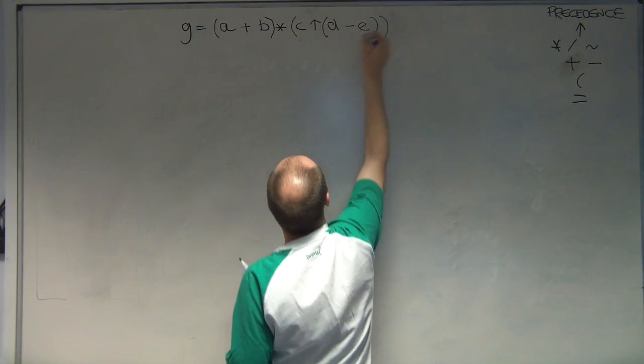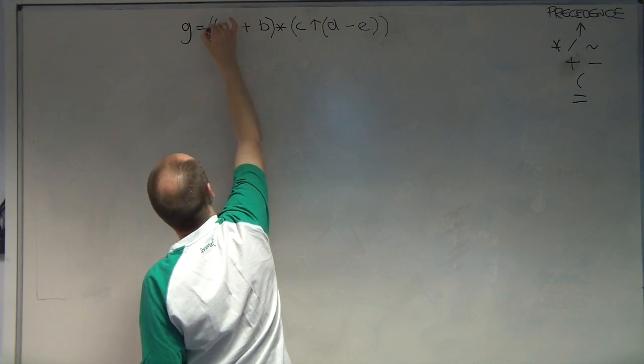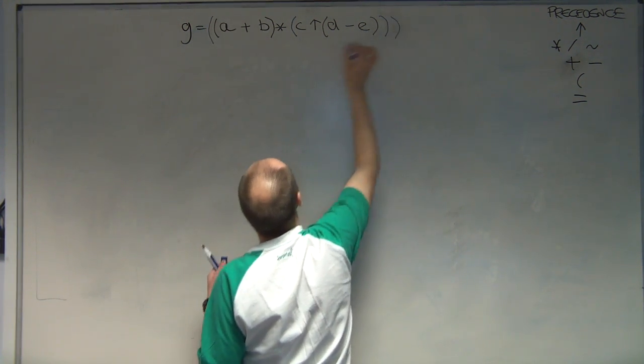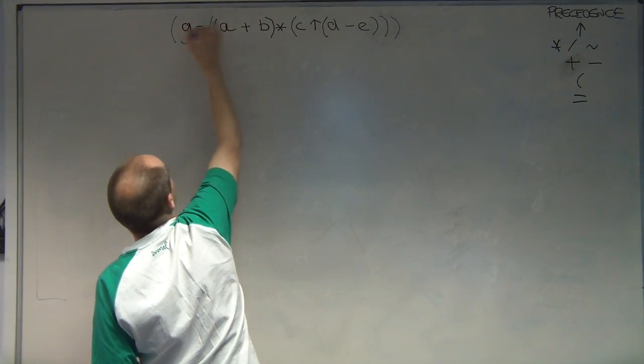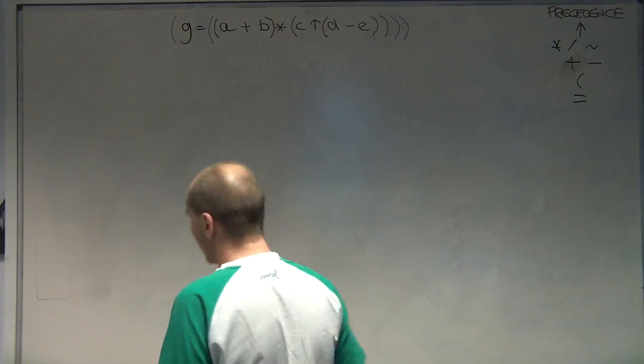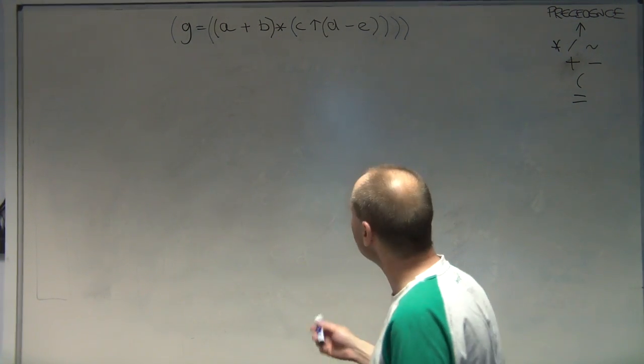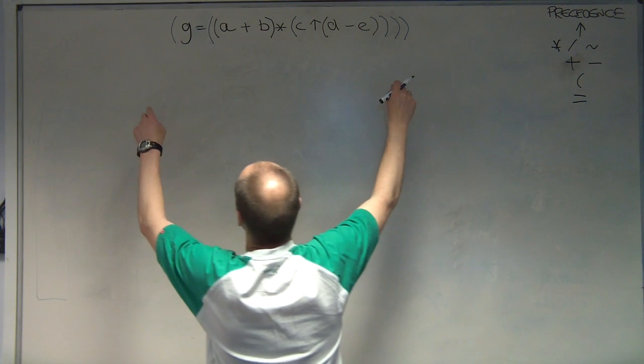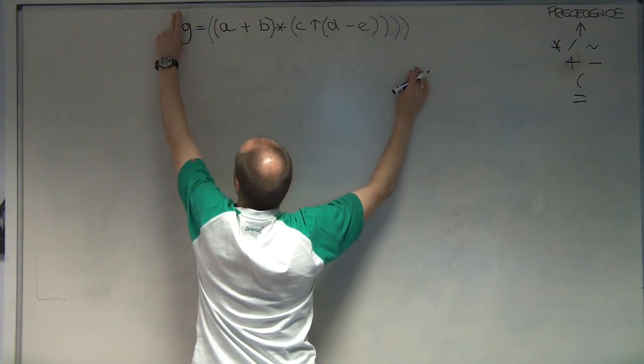So we're going to bracket round that. Then we do the multiply with those two expressions. Then we can do the assignment. Now that I've set that up I can start building the tree. So what I'm going to do is I'm looking for the outside pair of brackets. I'm going to take those away.